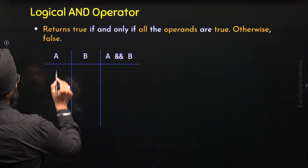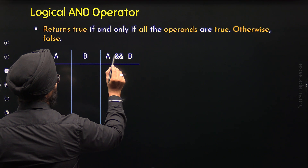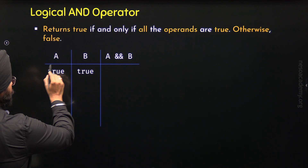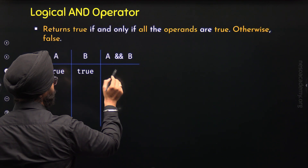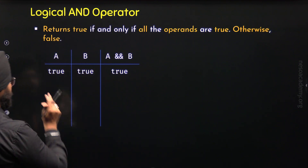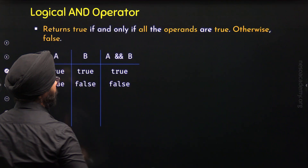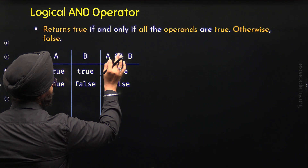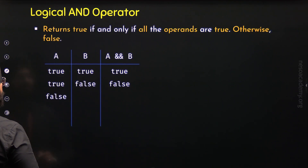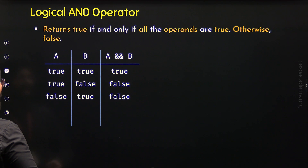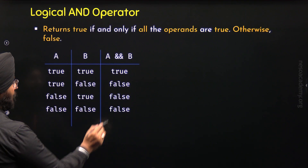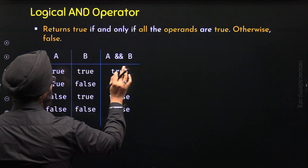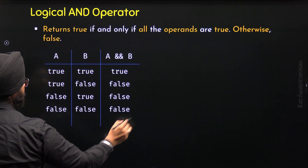Here is the truth table. We have two operands A and B, and the logical AND operator is applied on them. When A is true and B is true, both operands are true, so we get true as the result. When A is true and B is false, we get false, because if any one operand is false, the result is false. Similarly, when A is false and B is true, or when A is false and B is false, we get false as the result.